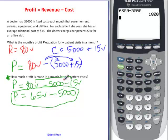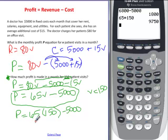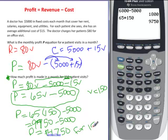How much profit is made in a month for 150 visits? So V is equal to 150. So P is equal to 65 times 150 minus 5,000. And 65 times 150 happens to be 9,750 minus 5,000. So profit is equal to, subtracting that, we would have $4,750 for 150 visits.